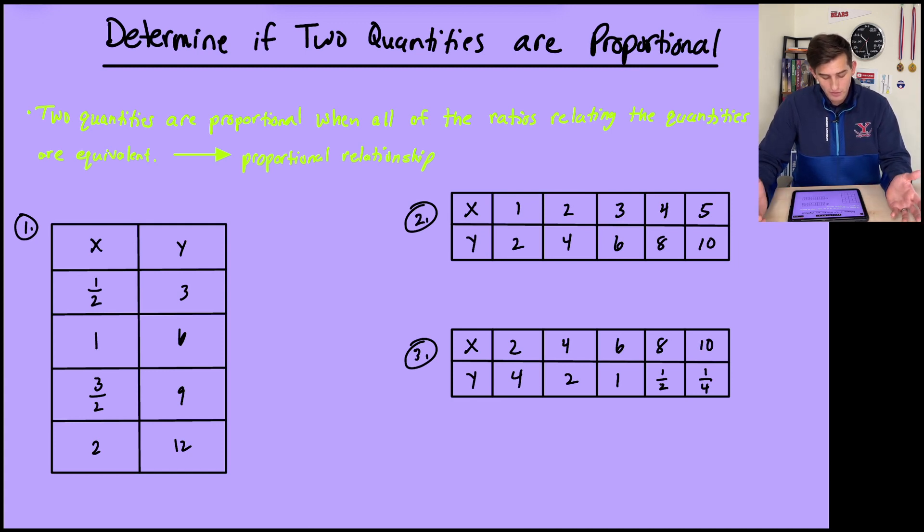So when are two quantities proportional? When all of the ratios relating the quantities are equivalent. And if they are equivalent, we would call this a proportional relationship.